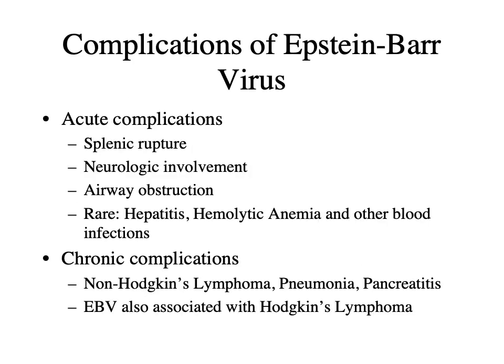Complications of Epstein-Barr virus can affect the spleen, liver, and nervous system, and can cause airway obstruction. Long-term chronic complications include cancers like non-Hodgkin's lymphoma or Hodgkin's lymphoma, pneumonia, and pancreatitis. This virus stays within the system and can infect other organs.